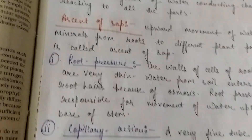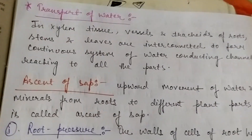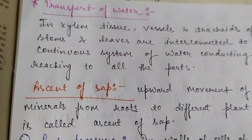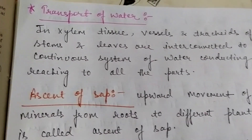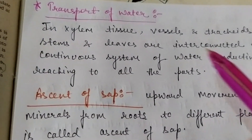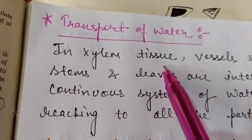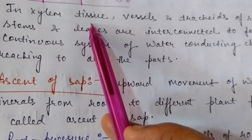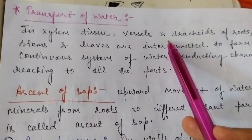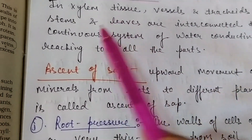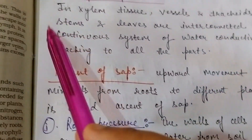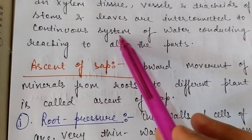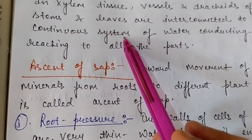Now, first we will talk about how water transport happens in plants. There are two things that are transported — one is transport of food and the other is transport of water. First is transport of water, which takes place through xylem.